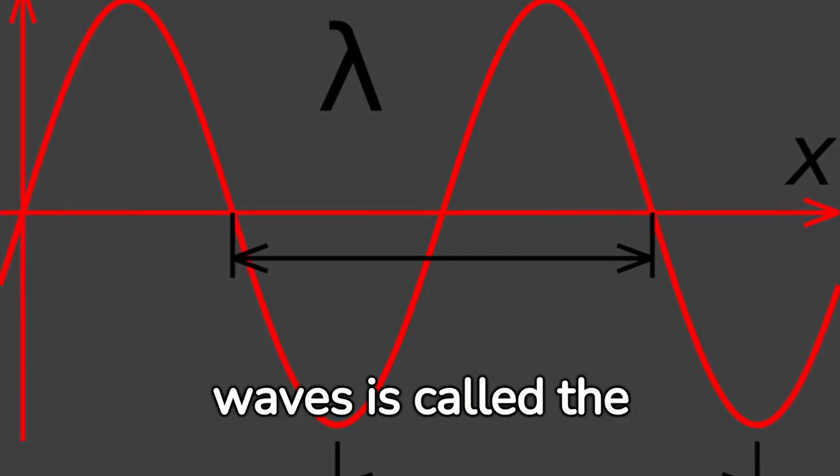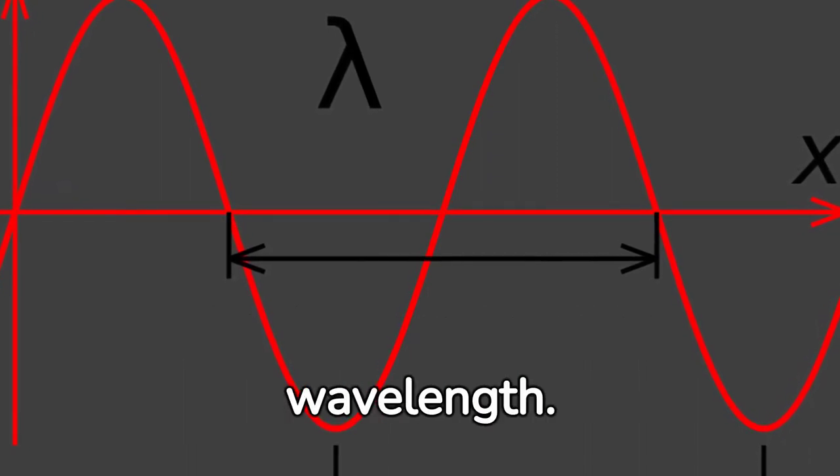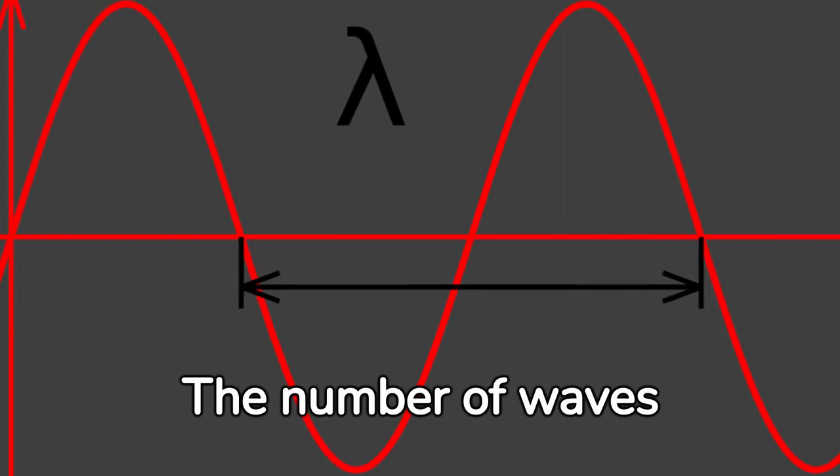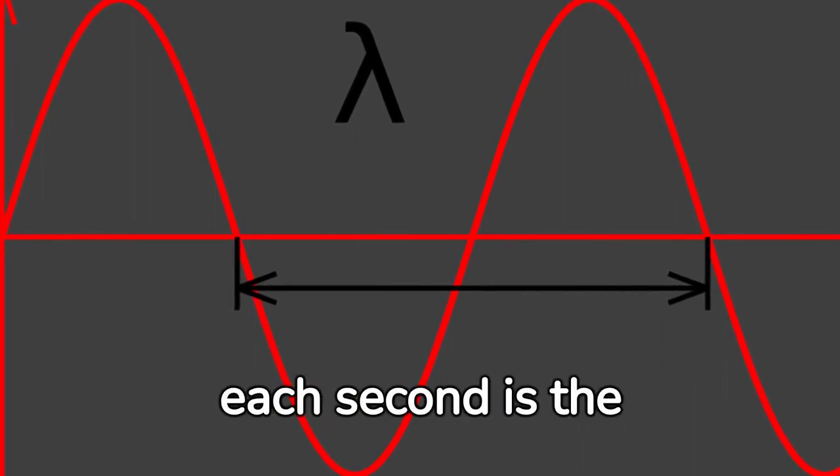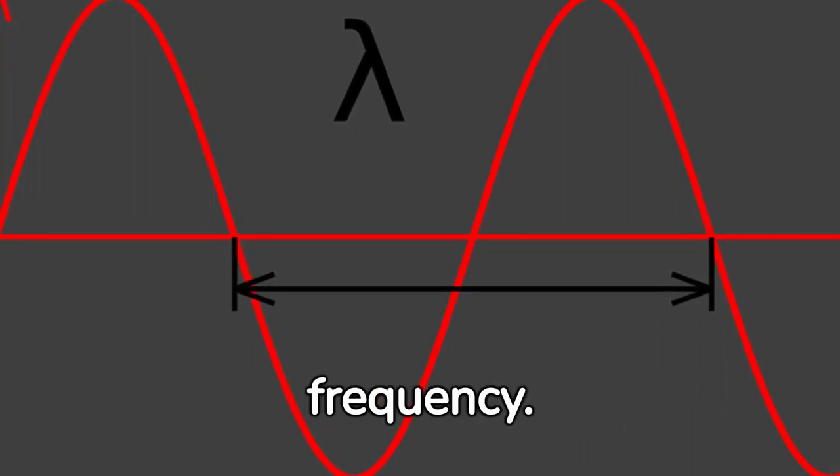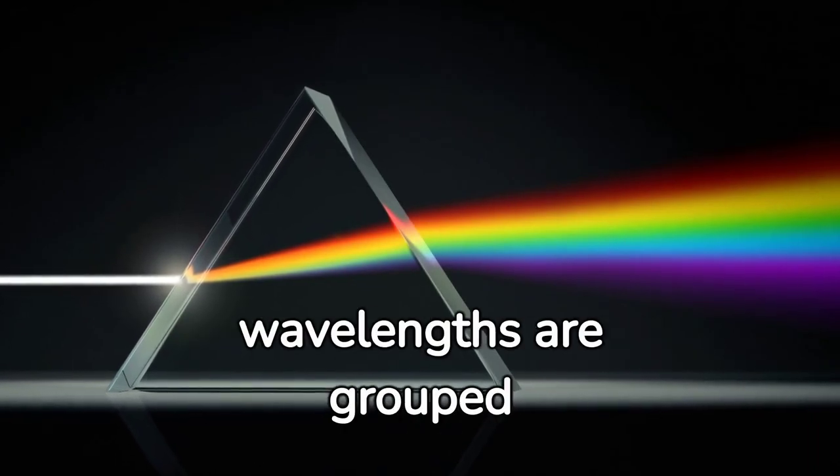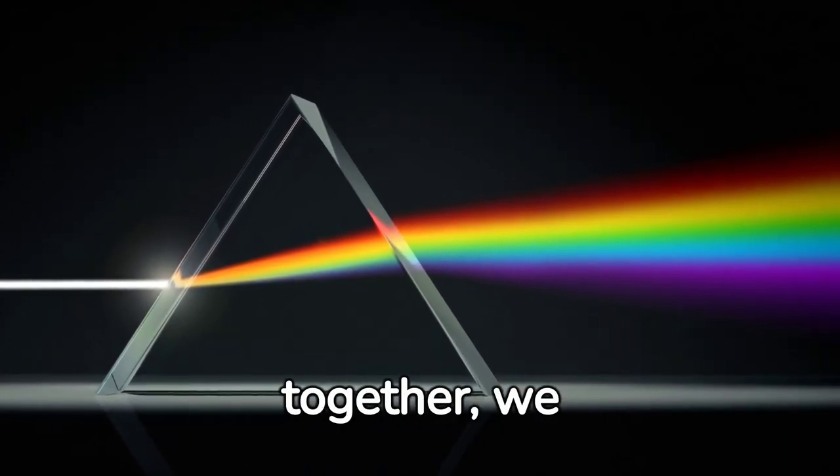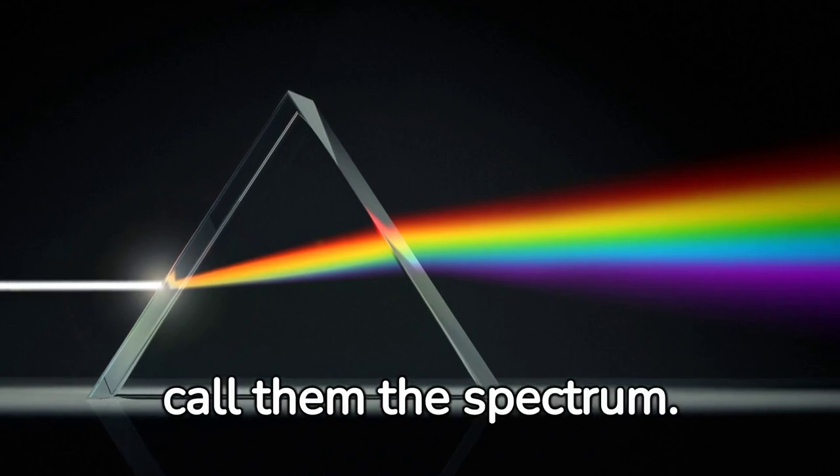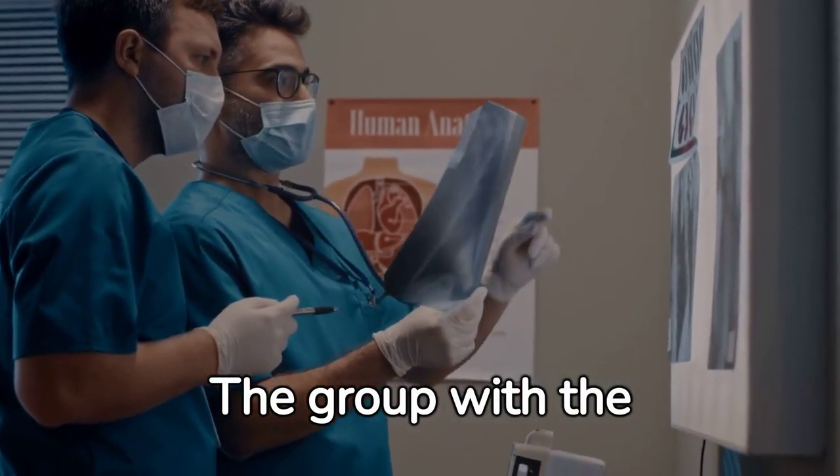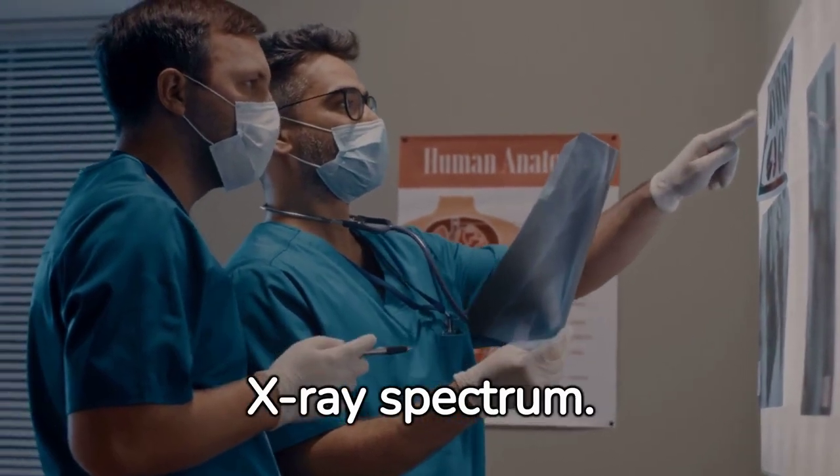The distance between the waves is called the wavelength. The number of waves passing a given point each second is the frequency. And where all the waves within a certain range of wavelengths are grouped together, we call them the spectrum. The group with the shortest wavelength is the x-ray spectrum.